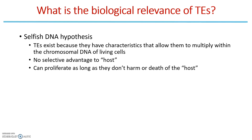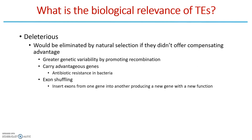One hypothesis is that they are selfish DNA — they exist simply because they can. They have characteristics that allow them to multiply and insert themselves, and they don't necessarily give a selective advantage to the host; they can proliferate as long as they don't harm it. Another view is that they would be eliminated by natural selection unless they confer some advantage, such as greater genetic variability through recombination, or in bacteria, carrying antibiotic resistance genes that help the host survive.